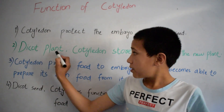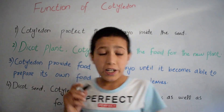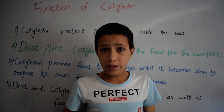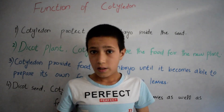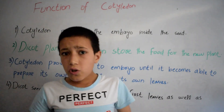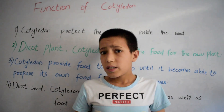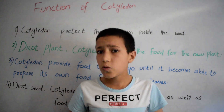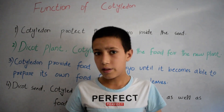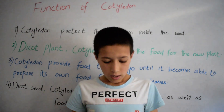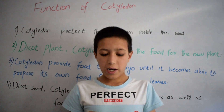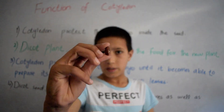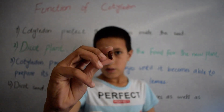The second function of cotyledon is that in dicot plants, the cotyledon stores food for the new plant. Do you know, students, what is a dicot plant? This is an example of a dicot plant — bean.